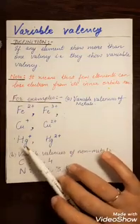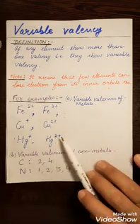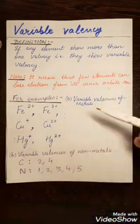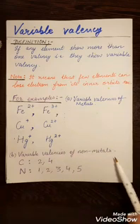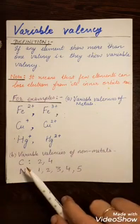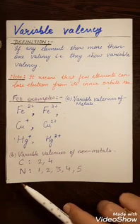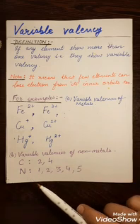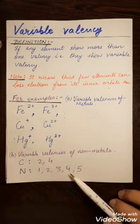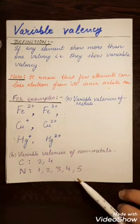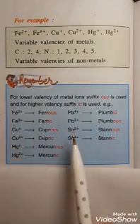Mercury Hg also shows variable valency — Hg⁺ for one valency and Hg²⁺ for two valency. These are a few examples of variable valency. For non-metals, carbon shows sometimes two valency and sometimes four valency. Nitrogen can show one, two, three, four, or five valency in different reactions.